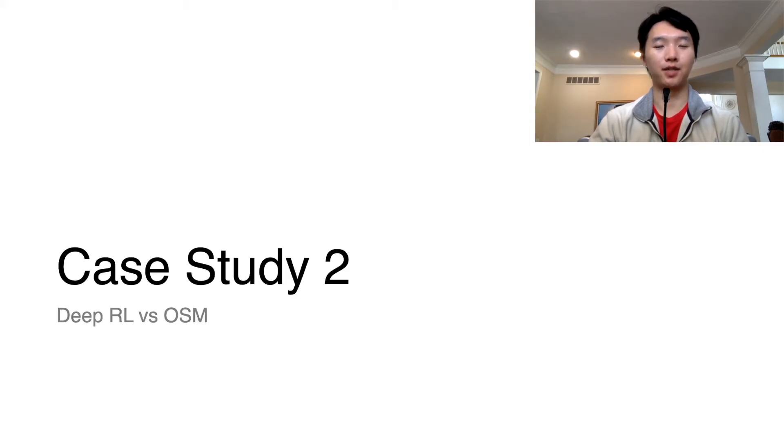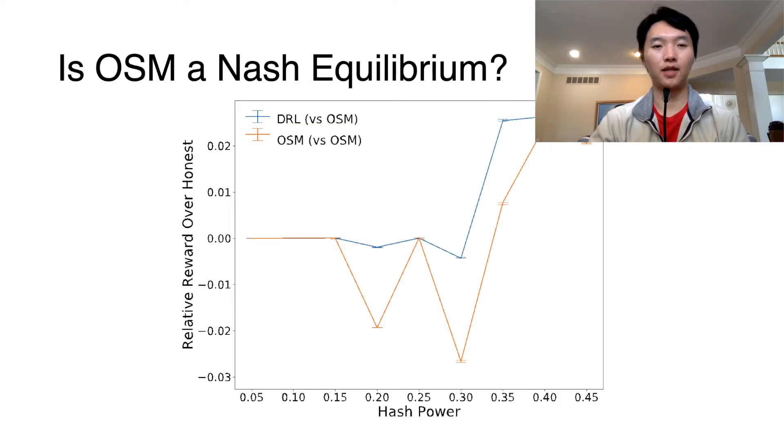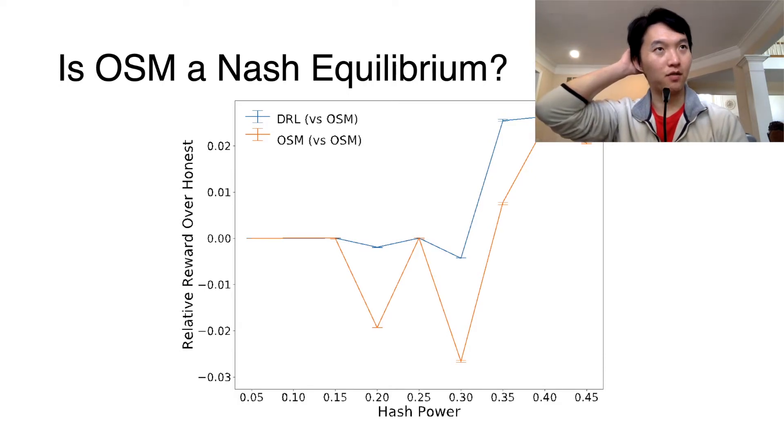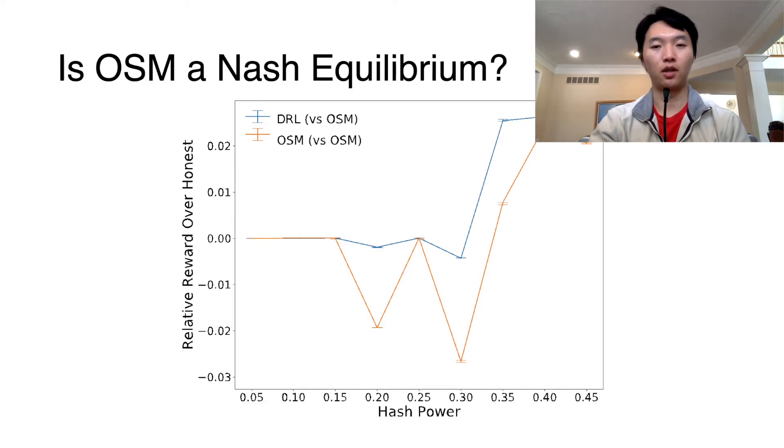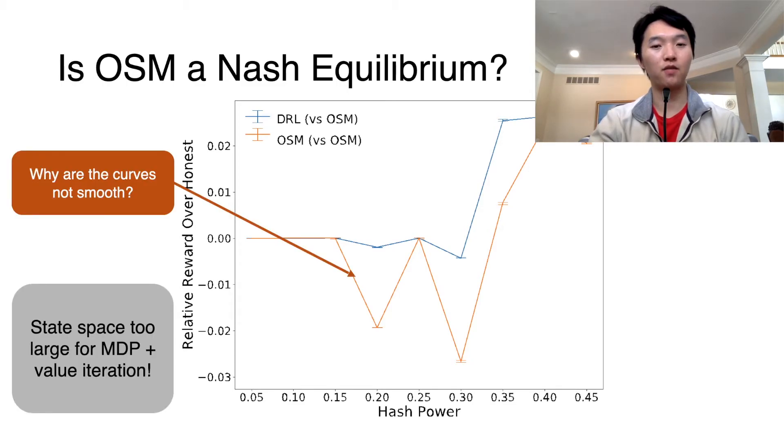We now present our second case study. Here the x-axis is the strategic agent's hash power, and the y-axis is the fraction of reward received above honest, while mining against an agent running OSM. In this case study, we wanted to ask a simple question: is OSM a Nash equilibrium with multiple players? The answer turns out to be no, as we can see that deep RL strategy outperforms OSM in the graph. However, in the process of doing so, we discovered some weird results. In the graph, we get some curves that are not smooth, and the strategic agents actually perform worse than the honest strategy. Why?